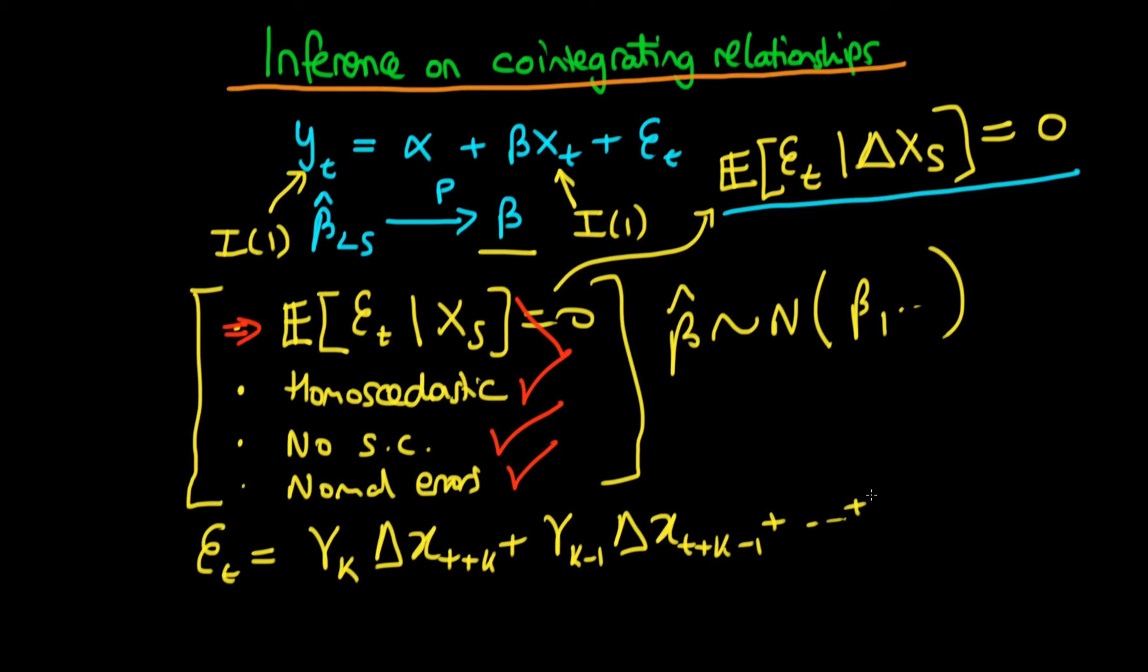And in principle even though we've included the leads, we also need to include potential lagged values of these delta terms, so we could sort of continue all the way up to gamma minus k times delta x t minus k.